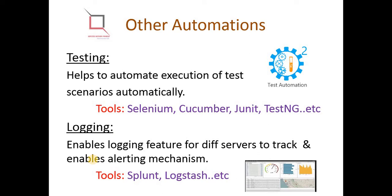Other automations include testing automation — running test cases automatically. Tools to enable automated testing include Selenium, Cucumber, JUnit, and TestNG. And logging — recording all your transactions, enabling the logging feature for different servers to track and troubleshoot, and also enabling alerting mechanisms. As soon as a transaction goes wrong or gets stuck, it sends alerts. Tools like Splunk and Logstash help enable the logging feature in your application.